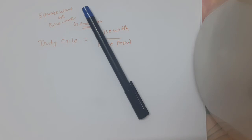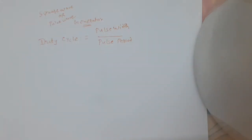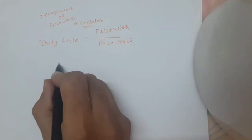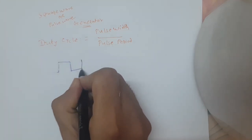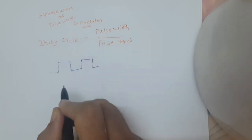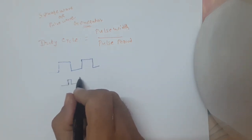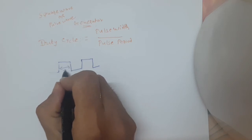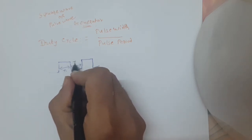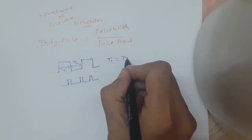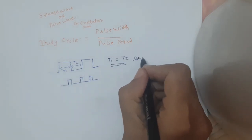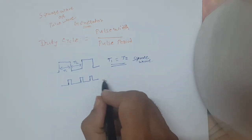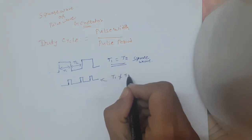What is square wave? What is pulse wave? This is your square wave and this is your pulse wave. If we consider T1 and T2, then if T1 is equal to T2, it is known as square wave. For pulse wave, T1 is not equal to T2.